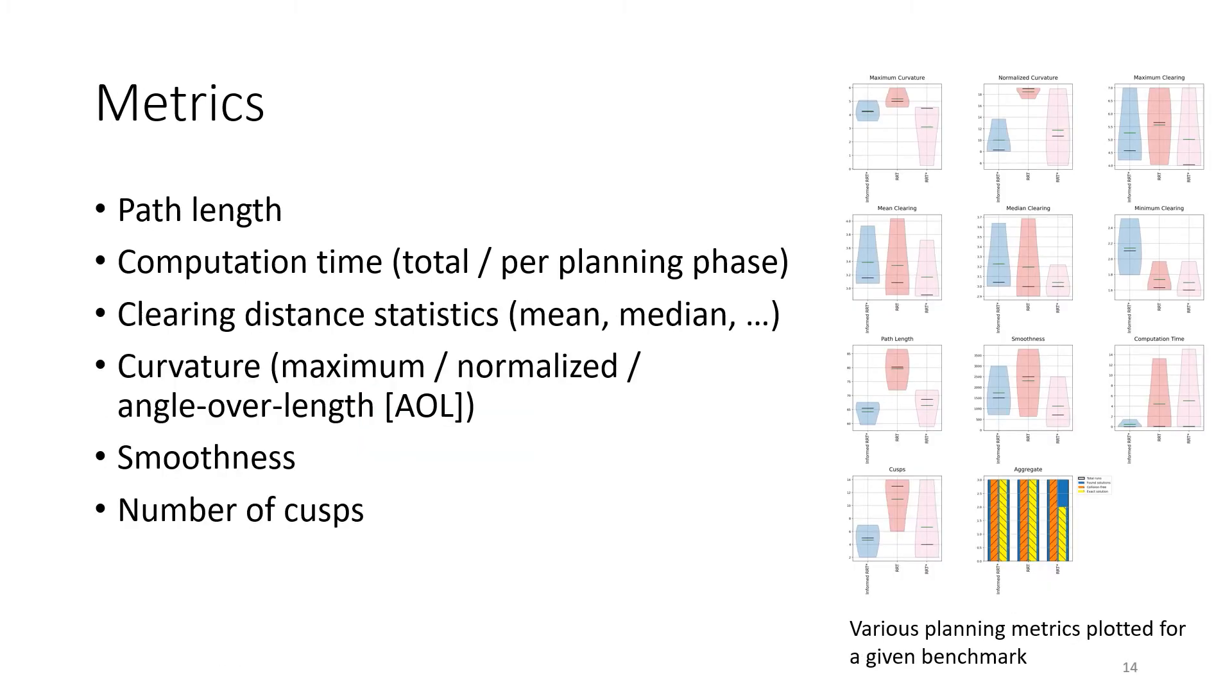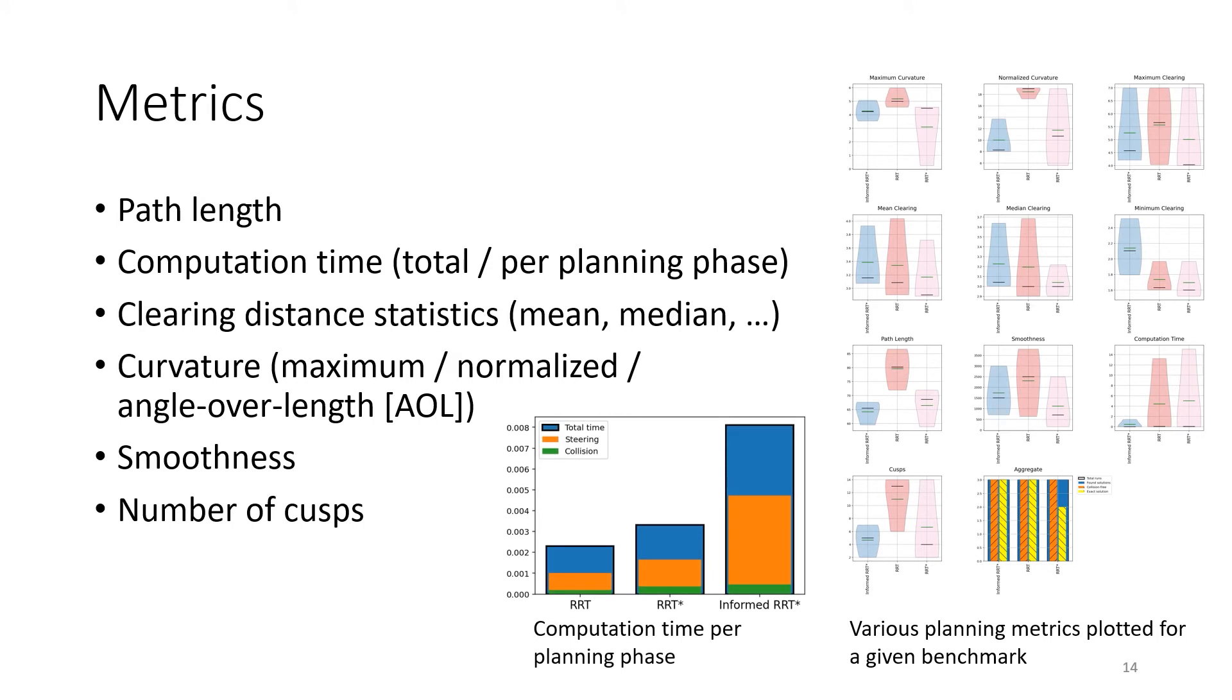Having found a solution, for each path that is processed through BenchMR, we compute a variety of metrics. Besides path quality metrics, such as path length, curvature, smoothness, and number of cusps, we also summarize the computation time by the different planning phases, such as collision detection and the evaluation of the extend functions. BenchMR is expandable by the user to support more metrics as well.